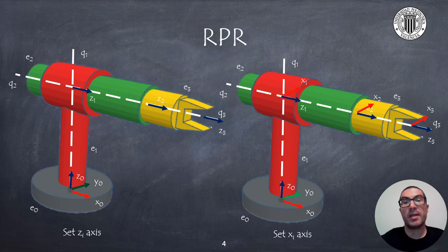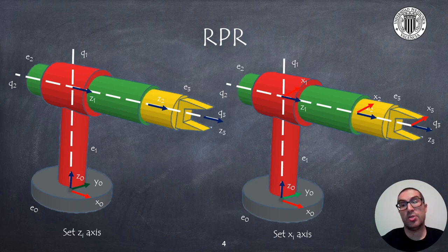The next step is to set the Z axis of the remaining reference frames. According to the method, each Z axis must lie along the subsequent joint. Therefore Z1 is placed along joint 2, Z2 is placed along joint 3, and Z3 has the same direction as Z2 because it is the last axis.